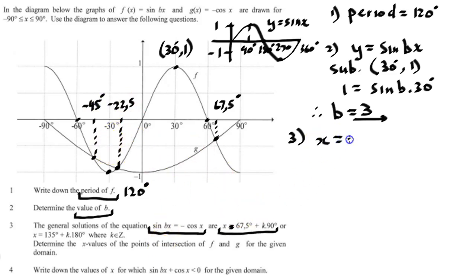So x = -45 degrees, x = -22.5 degrees, and x = 67.5 degrees. And those are my three intersection points.